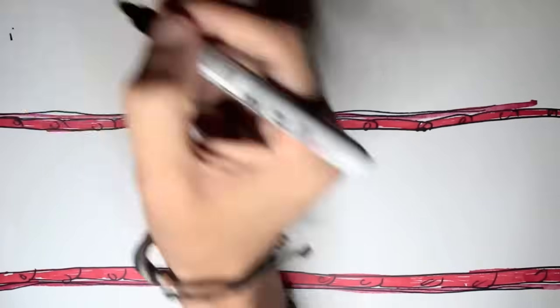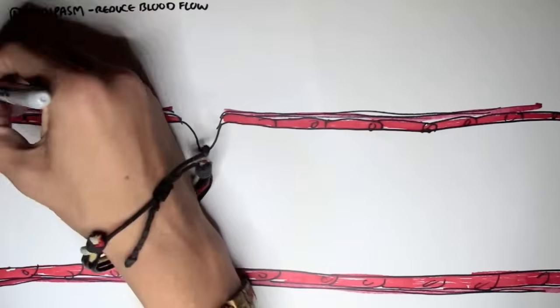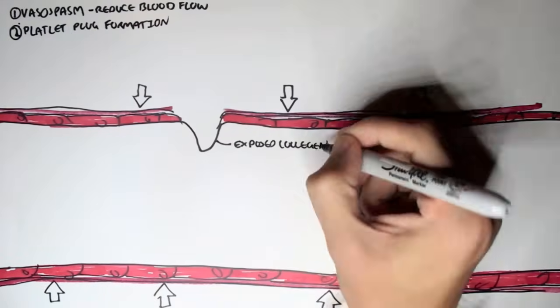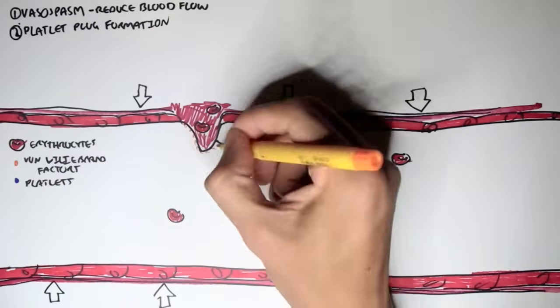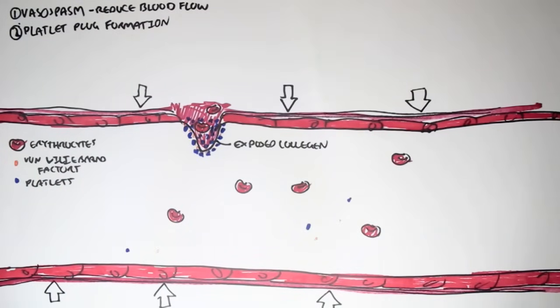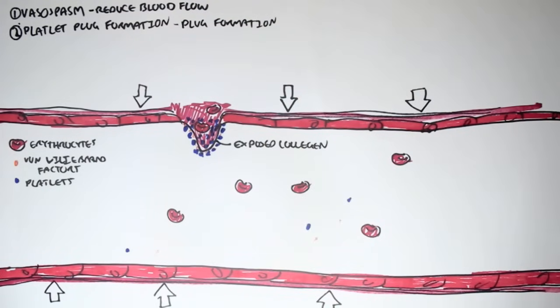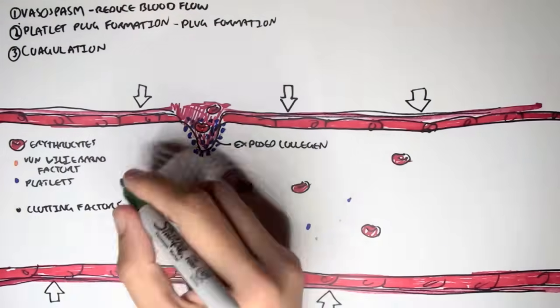Okay, so going back from the beginning, we first of all had vasospasm, or vasoconstriction, to reduce the blood flow. And this is where the smooth muscles contract to contract the blood vessels. Then we had the von Willebrand factors, which allows platelets, or thrombocytes, to form a platelet plug formation on the exposed collagen. And this causes the blood and other proteins to go out ever more slowly. After platelet plug formation, we have coagulation, also known as clotting. And this involves the clotting factors, prothrombin, and fibrinogen, which we will look into now.